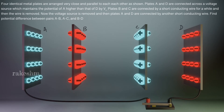Now find the potential difference between the pairs: A-B, then A-C, and finally B-D. So what is the potential difference between conductors A and B, then between A and C, and finally between B and D?